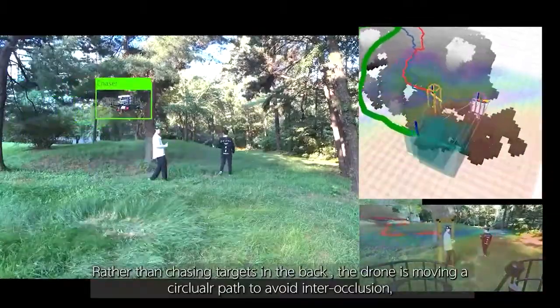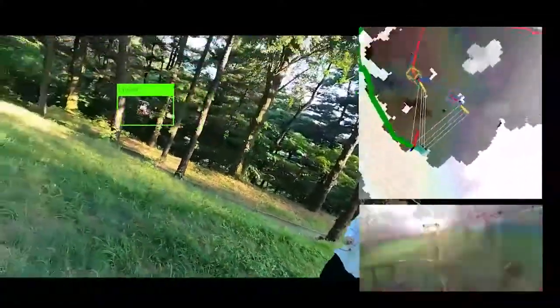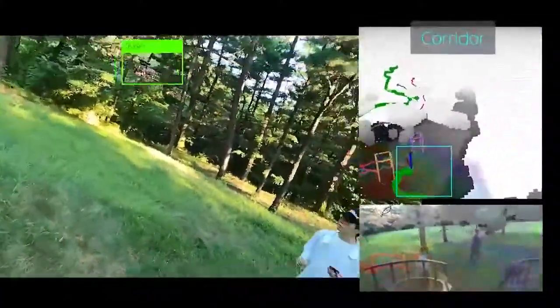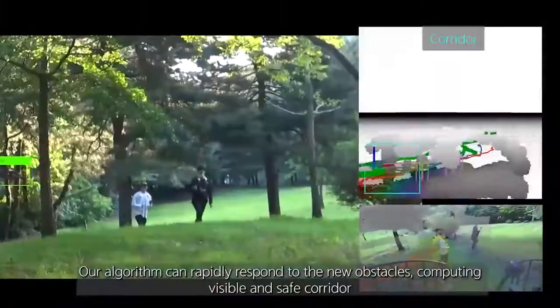Rather than chasing targets in the back, the drone is moving a circular path to avoid inter-occlusion. Our algorithm can rapidly respond to the new obstacles, computing visible and safe corridor.